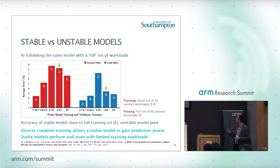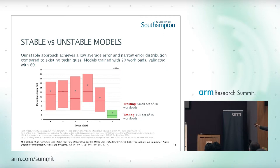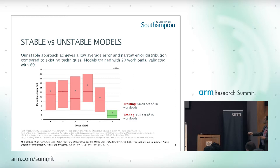Comparing against state-of-the-art approaches trained on 20 workloads and tested on a broader set, they all have approximately 10% error compared to real results, whereas our stable model achieves something down in the few percent range that we're looking for.